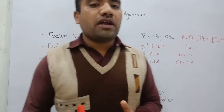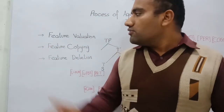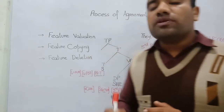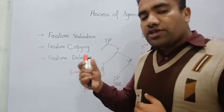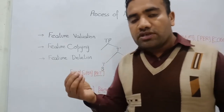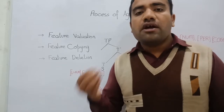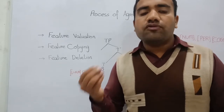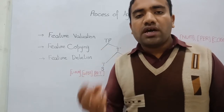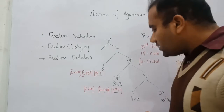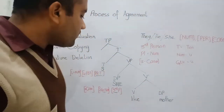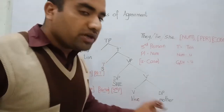The first process is feature valuation, where we represent these features in a systematic way and check which features are valued and which are unvalued for the categories involved within the derivation. Consider the sentence 'She likes mother.'